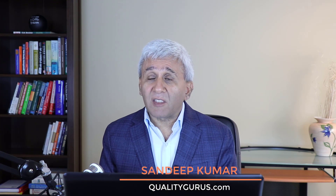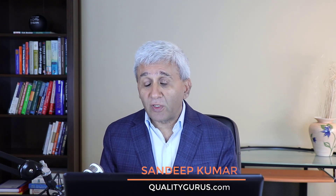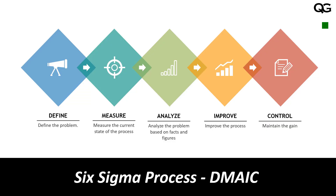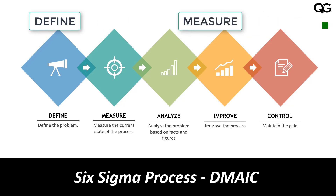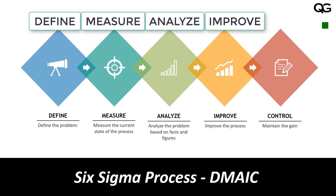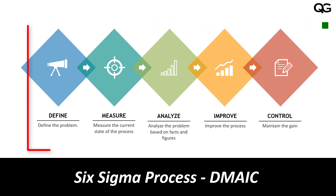When using Six Sigma as a process improvement tool, there are two approaches: DMAIC and DMADV. The DMAIC approach is used when you want to improve an existing process — if your existing process is giving too many defects or not satisfying client needs, you use DMAIC. DMAIC stands for D for Define, M for Measure, A for Analyze, I for Improve, and C for Control.